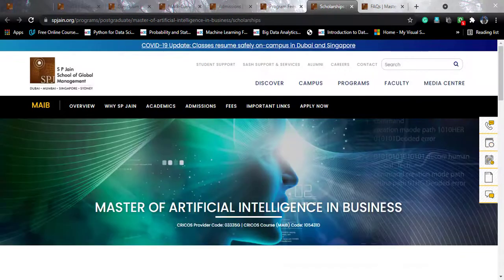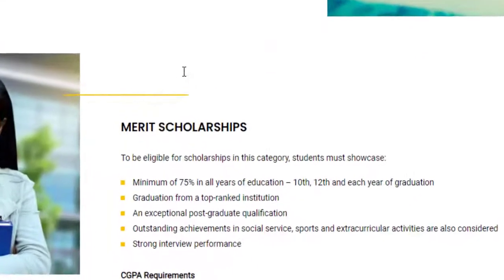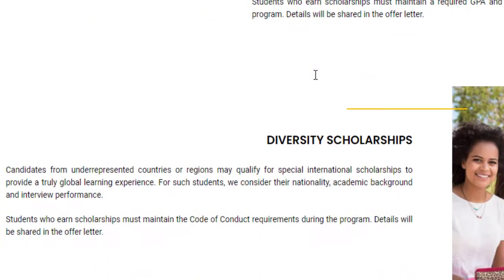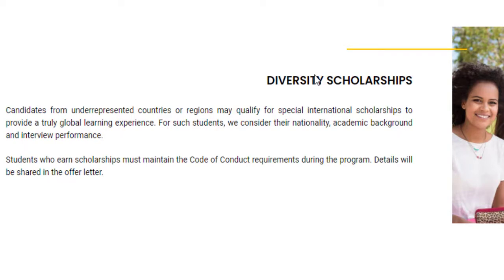There are merit scholarships offered by SP Jain for which you need 75% or above in all education years — 10th, 12th, and each graduation year separately. Being graduated from a top-ranked institution, having an exceptional postgraduate qualification, achievements in social service, sports, or extracurricular activities, and a strong interview performance also help. There is also a diversity scholarship for candidates from underrepresented countries. You don't need to apply separately for any scholarship — once you apply for the program, you will automatically be considered, and if your profile stands out, the admissions committee will award scholarships.